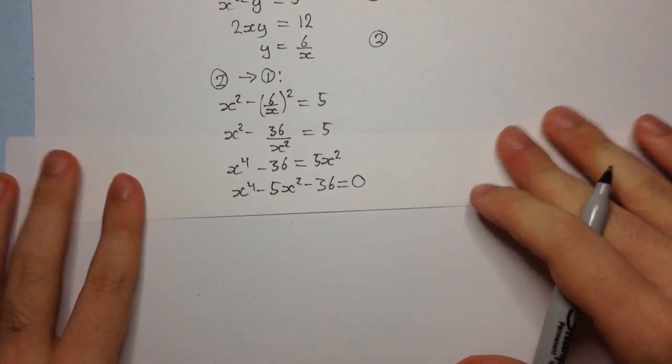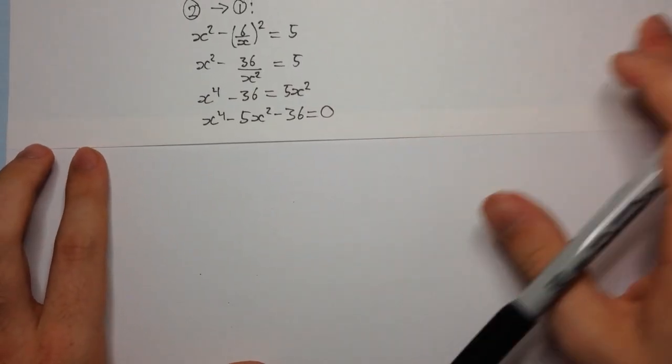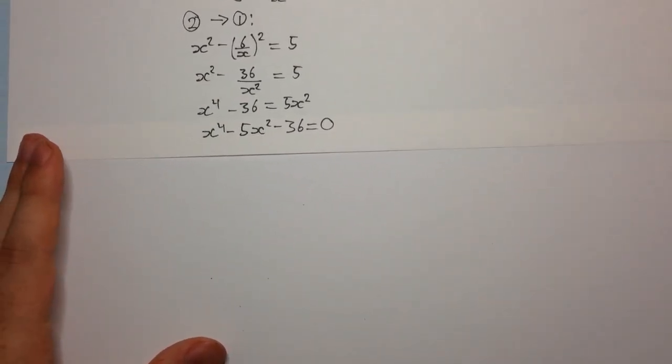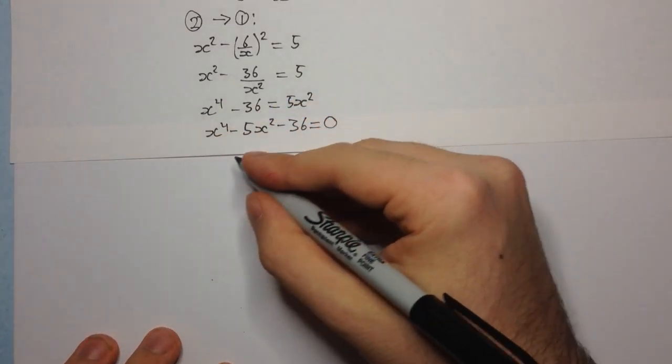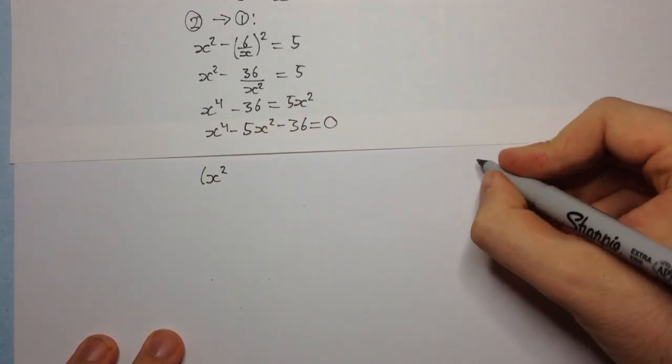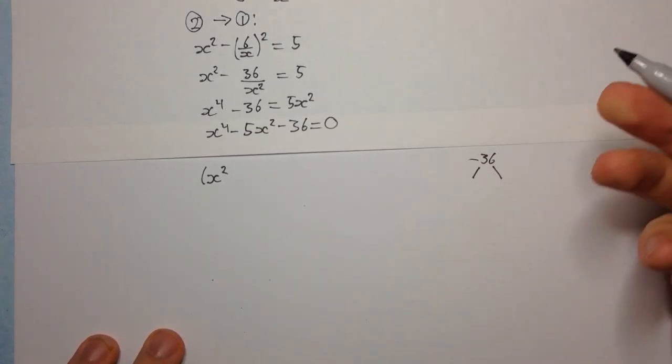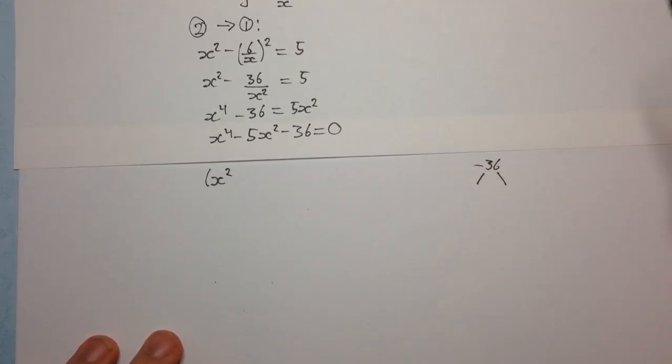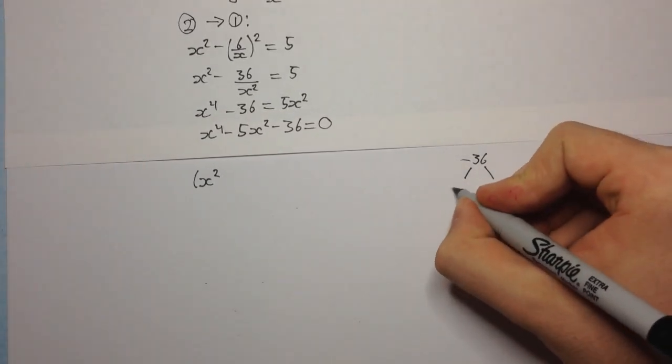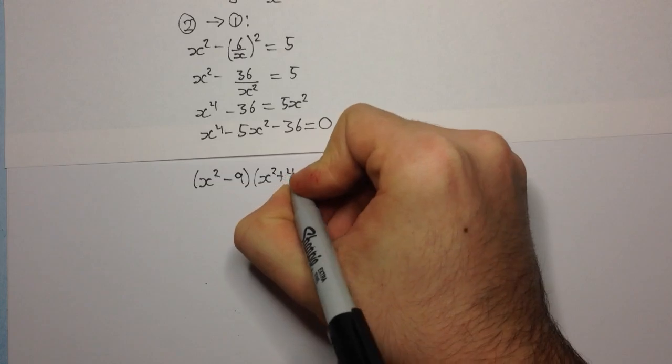All right, now we need to solve this equation for x. Now you should notice that this is a quadratic equation in x squared. So we can factorize this and we're going to get x squared. Now we need two numbers that multiply to give negative 36 and add to give negative 5. So this is just my way of factorizing. You might have a different way. So these two numbers are going to be minus 9 and 4. So we're going to have x squared minus 9 and x squared plus 4 equal to 0.